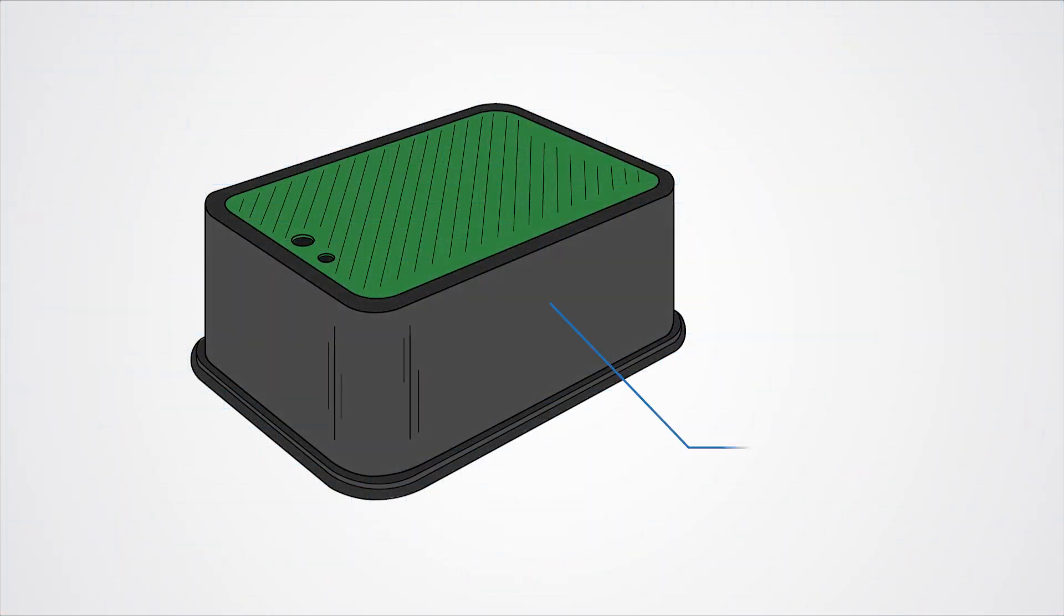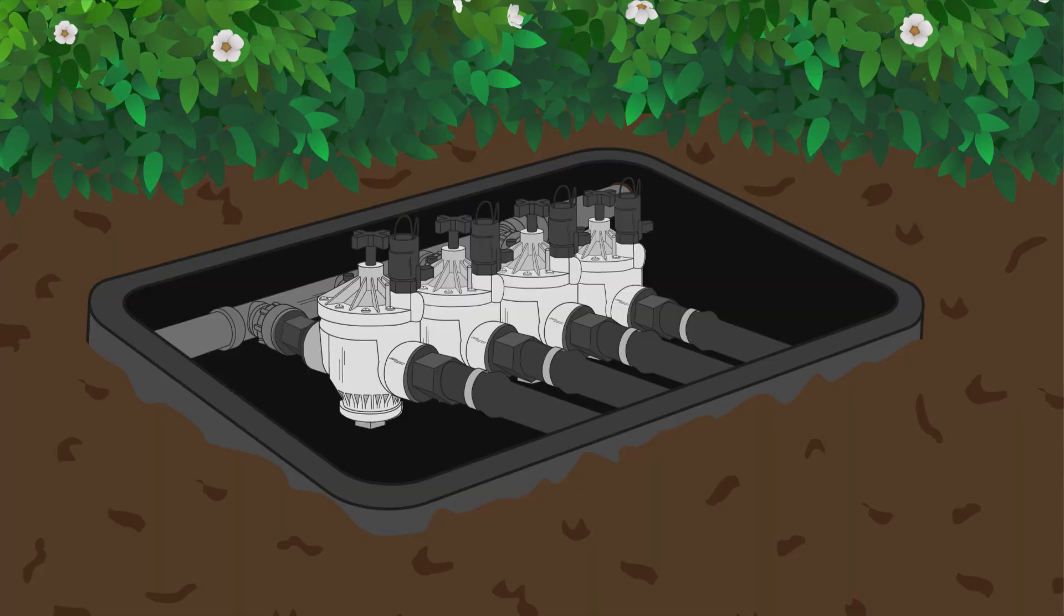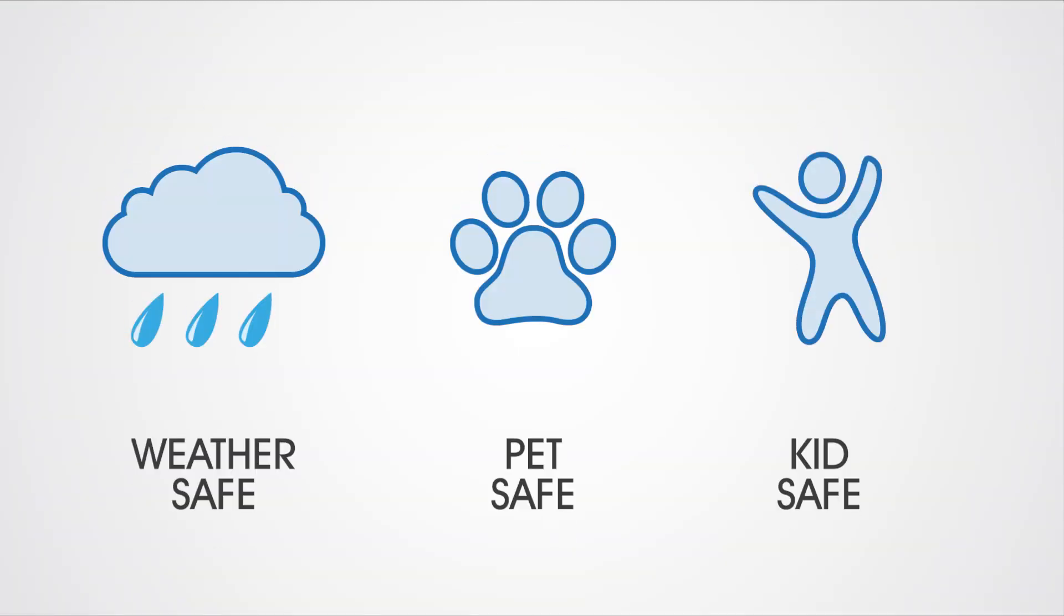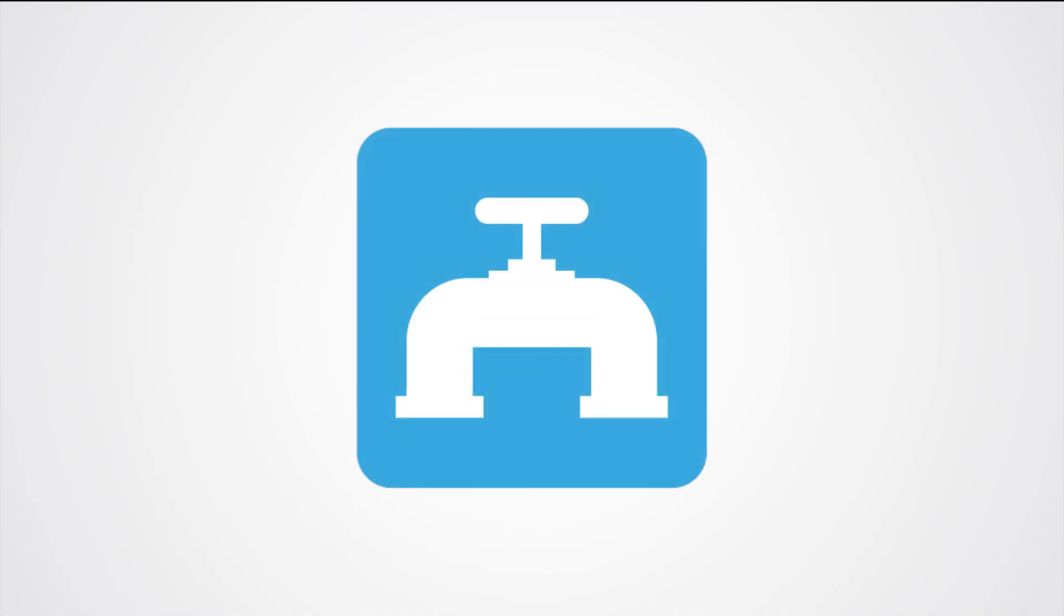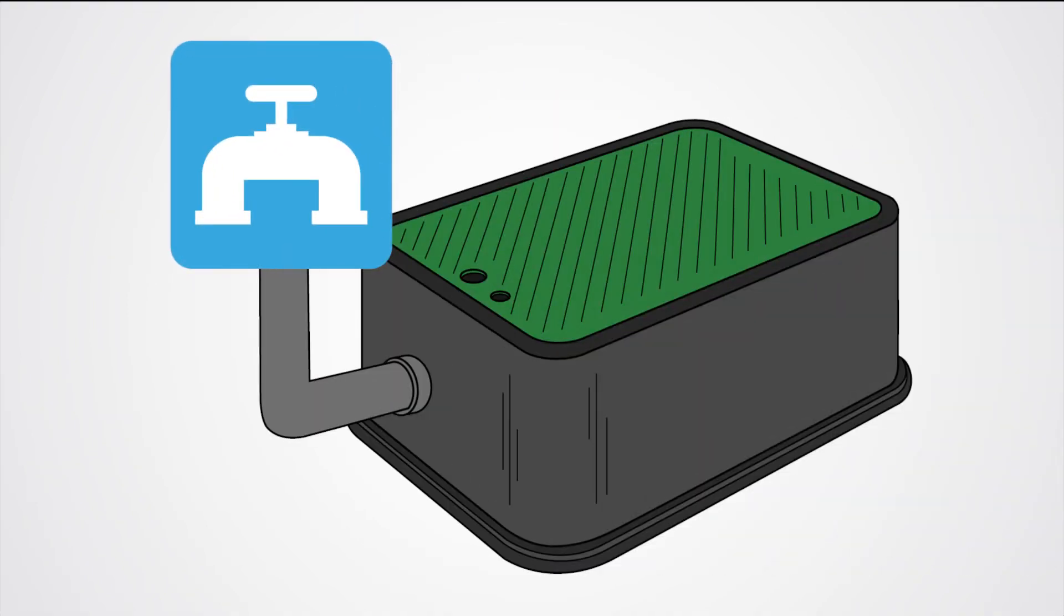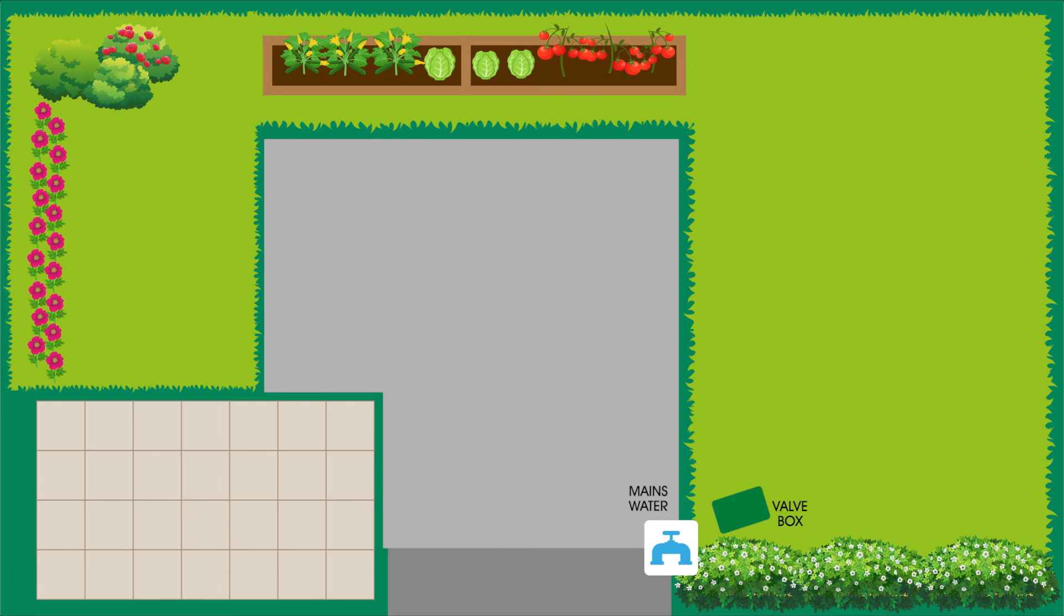To protect your automation system, cover it with a valve box. This keeps it safe from weather, pets, and kids. Place your valve box somewhere with easy access to your main water source and near your irrigation system.